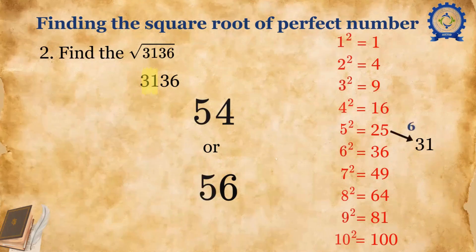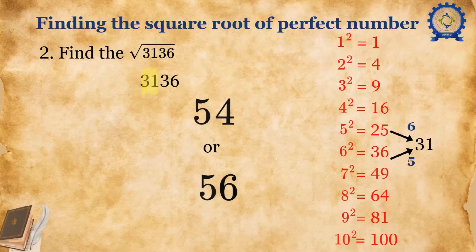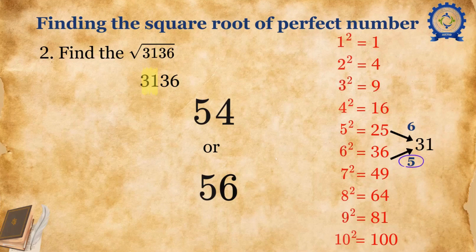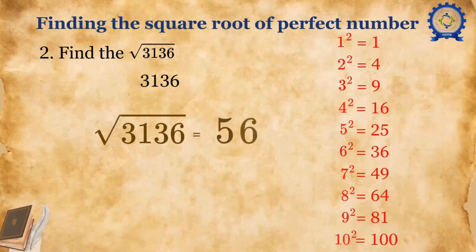Next, we'll consider the difference. The difference between 25 and 31 is 6, and the difference between 36 and 31 is 5. The lowest value here is 5, which is at the bottom. So we'll consider the bottom value, 56. Hence, the square root of 3136 is 56.